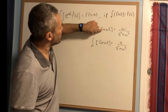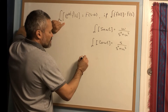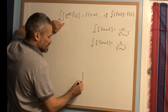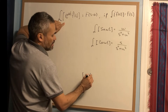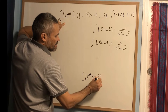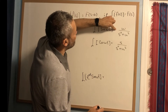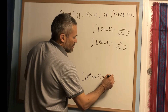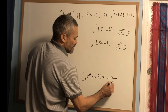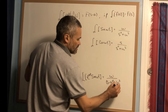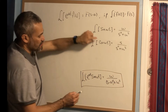Using the shifting theorem, since F(s) for sin(ωt) is ω/(s²+ω²), we evaluate at s-a. So the Laplace transform of e^(at) sin(ωt) is ω over (s-a)² plus ω².